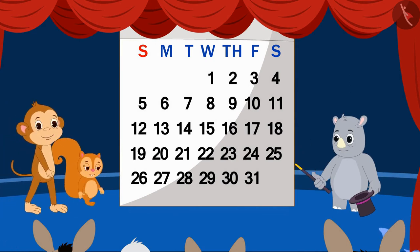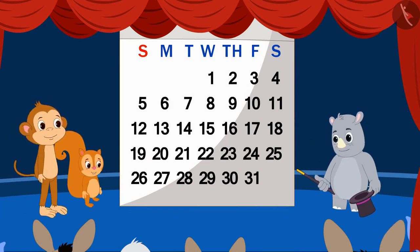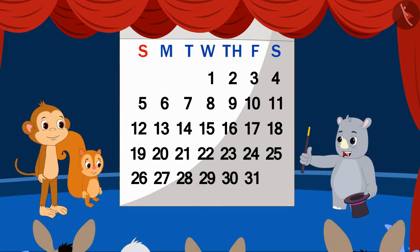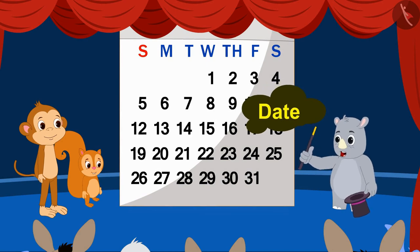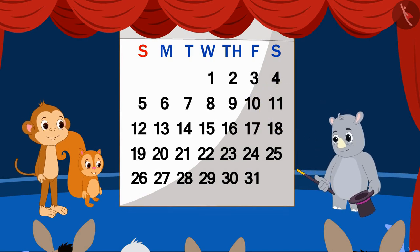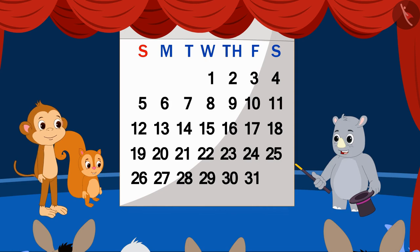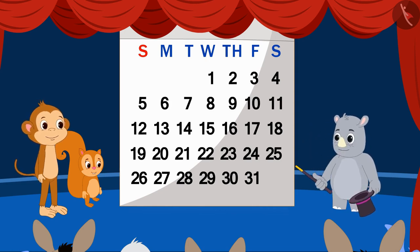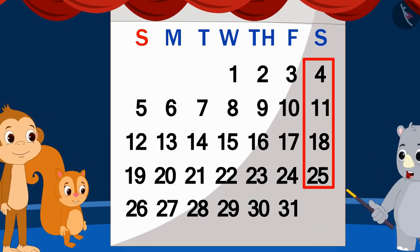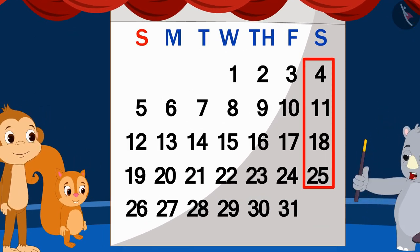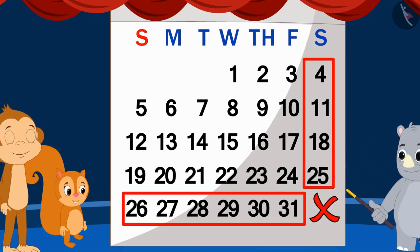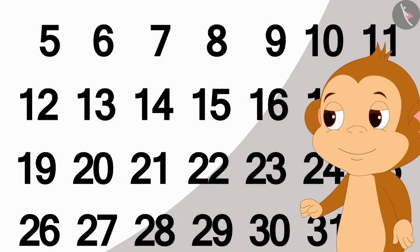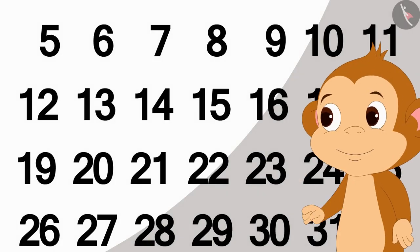Babban and Chanda immediately got on the stage. Gagu asked both of them to choose a date and make a circle on it. They had to keep in mind that the date should not be in the last vertical or horizontal line of the month. Chanda chose the date 7th and Babban chose the date 19th.